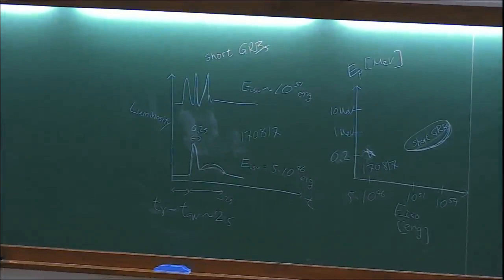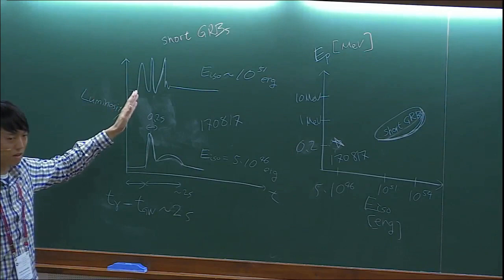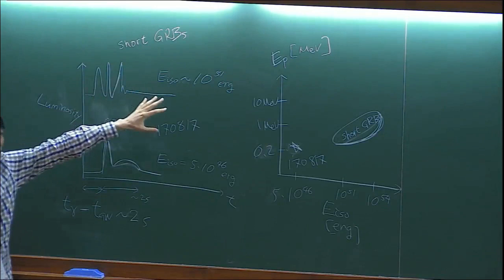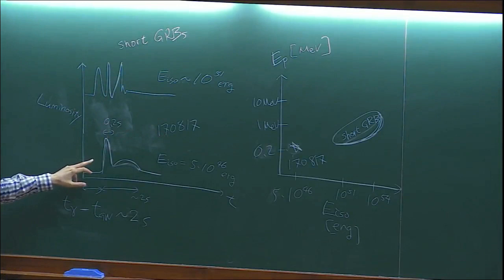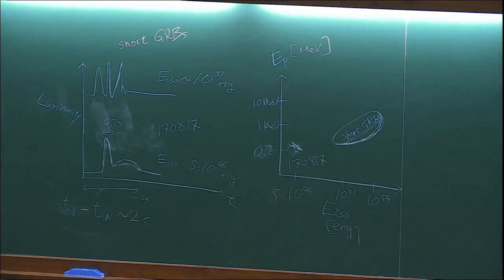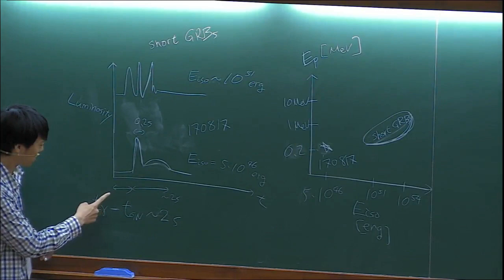Let me first summarize what we were discussing yesterday. We started the discussion about GRBs. This is luminosity as a function of time. For short GRBs, we see some short pulse within two seconds. This is a typical GRB - the total energy is about 10 to the 51. And this is what we saw in the merger event, which was very faint in luminosity. The isotropic equivalent energy is four or five orders of magnitude lower than typical short GRBs, and even two orders of magnitude fainter than the faintest short GRBs we know.